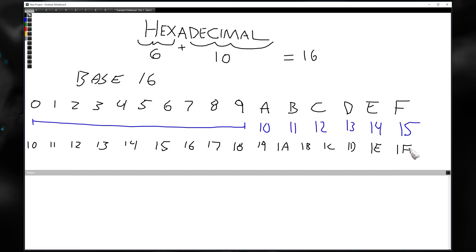As you start working with this stuff, you're going to be thinking in decimal. You're going to try as hard as you can to think in hexadecimal and you're going to screw up. You're going to think of 16 as just 16, not realizing that 16 in hex equals 22 in decimal if you count it up properly.